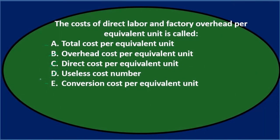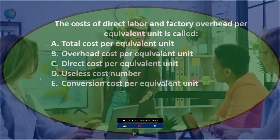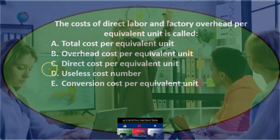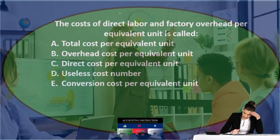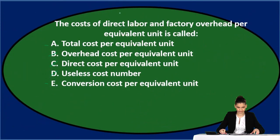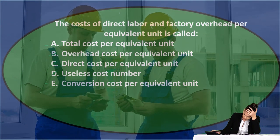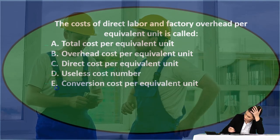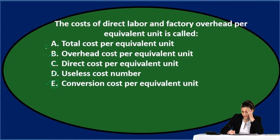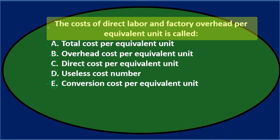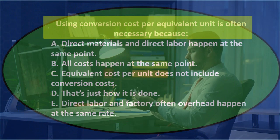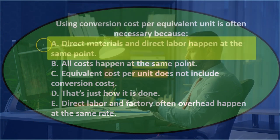Option E, conversion cost per equivalent unit — that sounds like it could be something. So we narrow it to A and E. If we think about the three factors — material, labor, and overhead — material is the thing we are converting, while labor and overhead are what we use to convert the material from raw material to finished good. So E is the answer: it's not total cost per equivalent unit because that's missing the materials distinction. Final answer: E, conversion cost per equivalent unit.